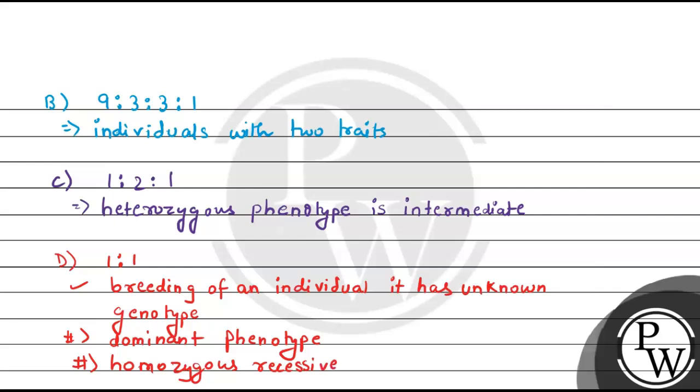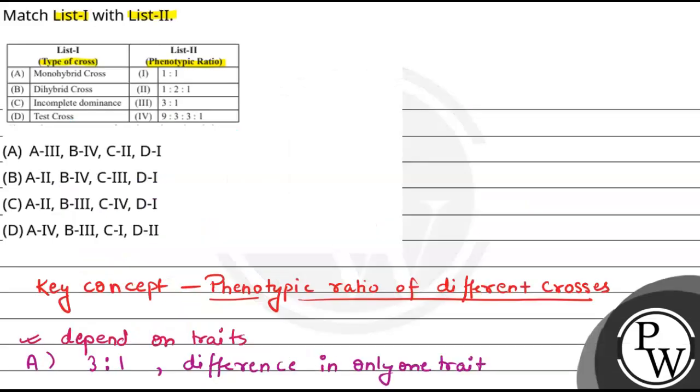This way, we can say that our correct option here will be option A, in which A is correct match 3, B is correct match 4, C is correct match 2, and D is correct match 1. Hope you have understood it well. Best of luck. Thank you.